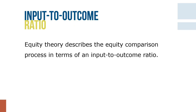Equity theory describes the equity comparison process in terms of an input-to-outcome ratio. Inputs are the individual's contributions to the organization, such as factors as education, experience, effort, and loyalty. Outcomes are what the person receives in return: pay, recognition, social relationships, intrinsic rewards, and similar things.